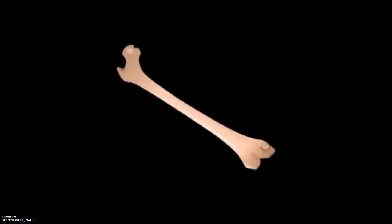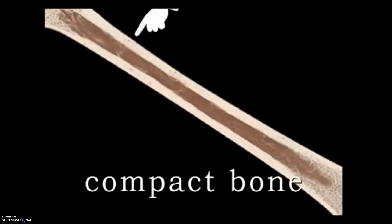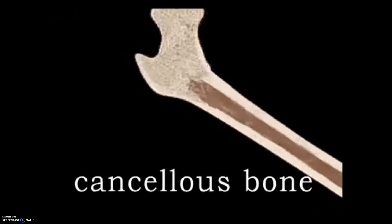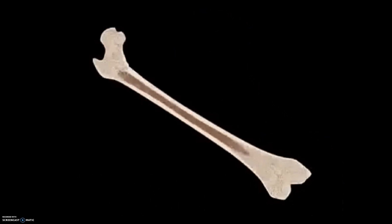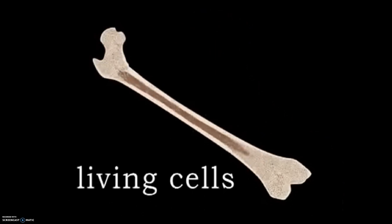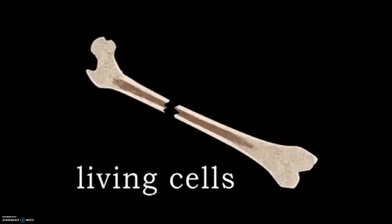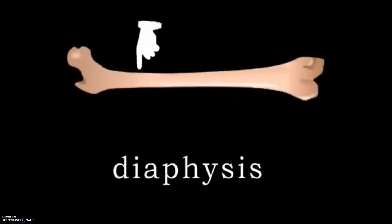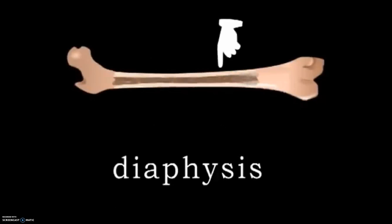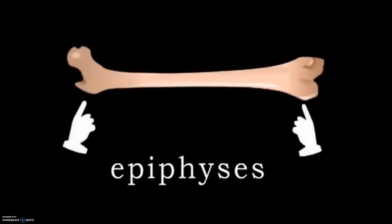There are two types of bone tissue: compact bone, which is dense, smooth, and very strong, and cancellous bone, which is spongy and lightweight. Both types of bone tissue contain living cells which help make repairs if a bone is injured or broken. A typical long bone has a main shaft called the diaphysis composed of compact bone, and two ends called epiphyses composed of cancellous bone.